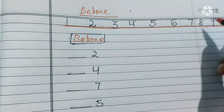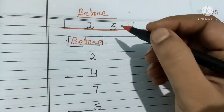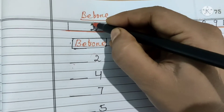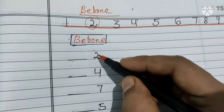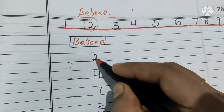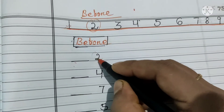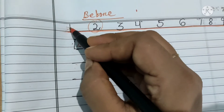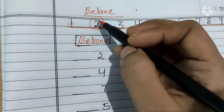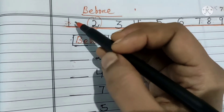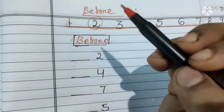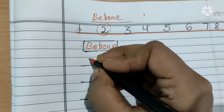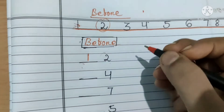Chalou number line mein dekh lete hain kahan pe number 2 hai. Here is number 2. What comes before number 2? Number 1 comes before number 2. Number 2 se pahle 1 aata hai. So haam abhi kya likhenge? Number 1.